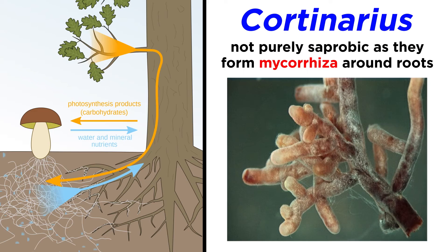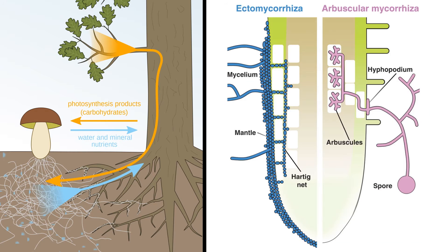These mushrooms are not purely saprobic, so throughout their life cycle they do not always need to break down organic matter to survive. Instead, they form mutually benefiting relationships called mycorrhiza — myco meaning fungi, and rhiza meaning root — so mycorrhizal relationships form between fungi and plant roots. A number of fungi form mycorrhizal relationships of different types.